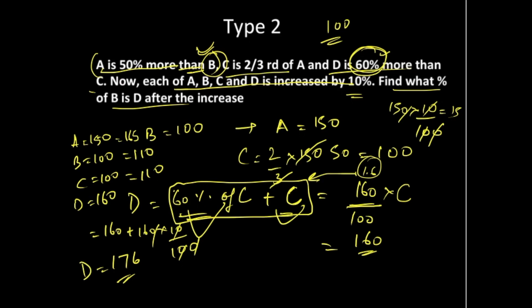Now all the values are given to us. The question asks what percent of B is D after the increment. So you can write D equals x percent of B. You write 176 is x percent of B, that is 110. This is how you calculate the percentage value of one in terms of the other.